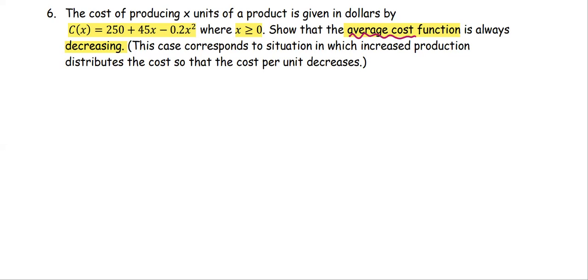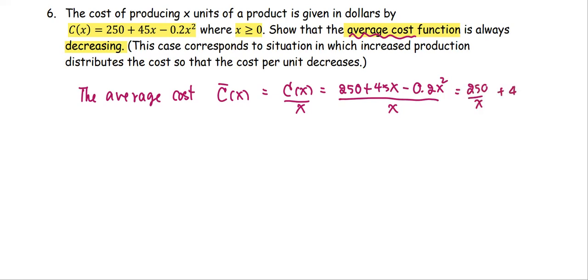We're going to start by defining the average cost function, which is C̄(x), formed by the total cost divided by x. In this case, it's (250 + 45x - 0.2x²)/x. We can simplify this to be 250/x + 45 - 0.2x.